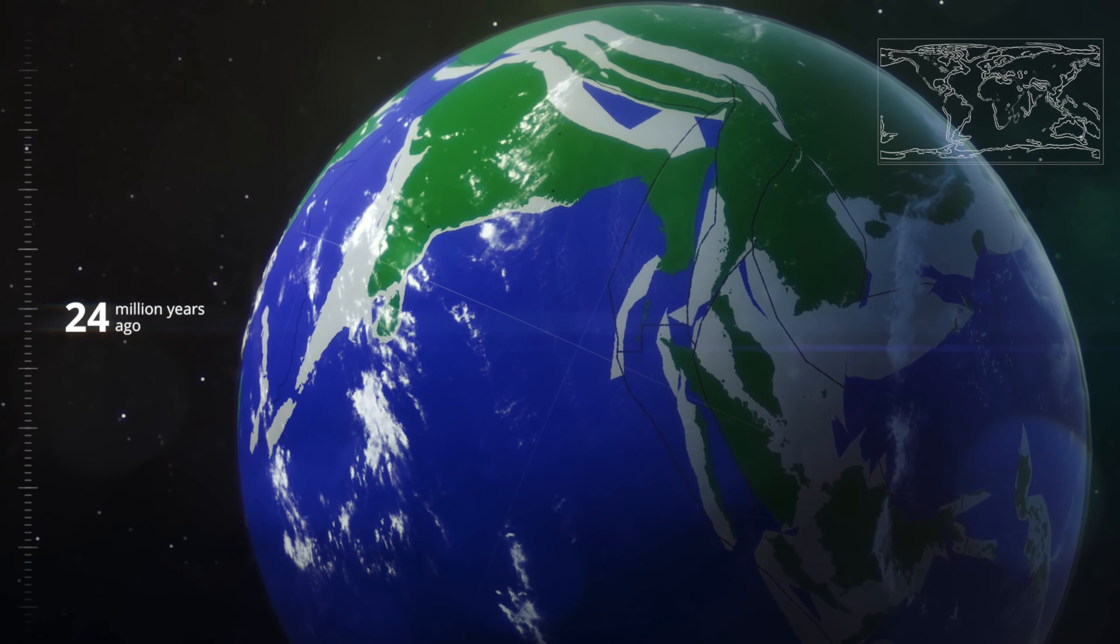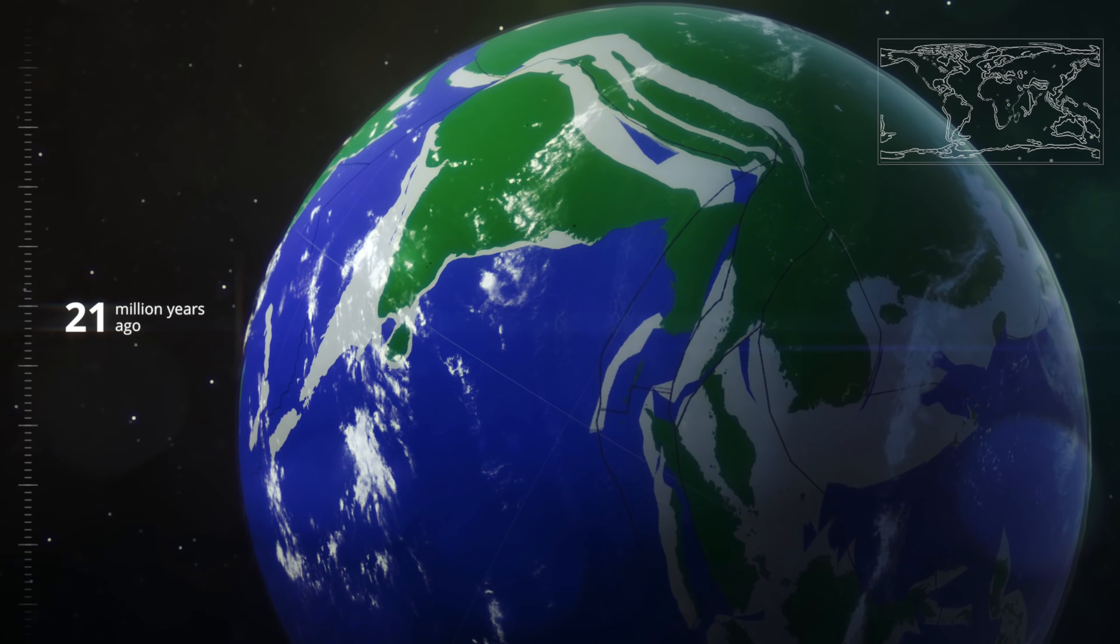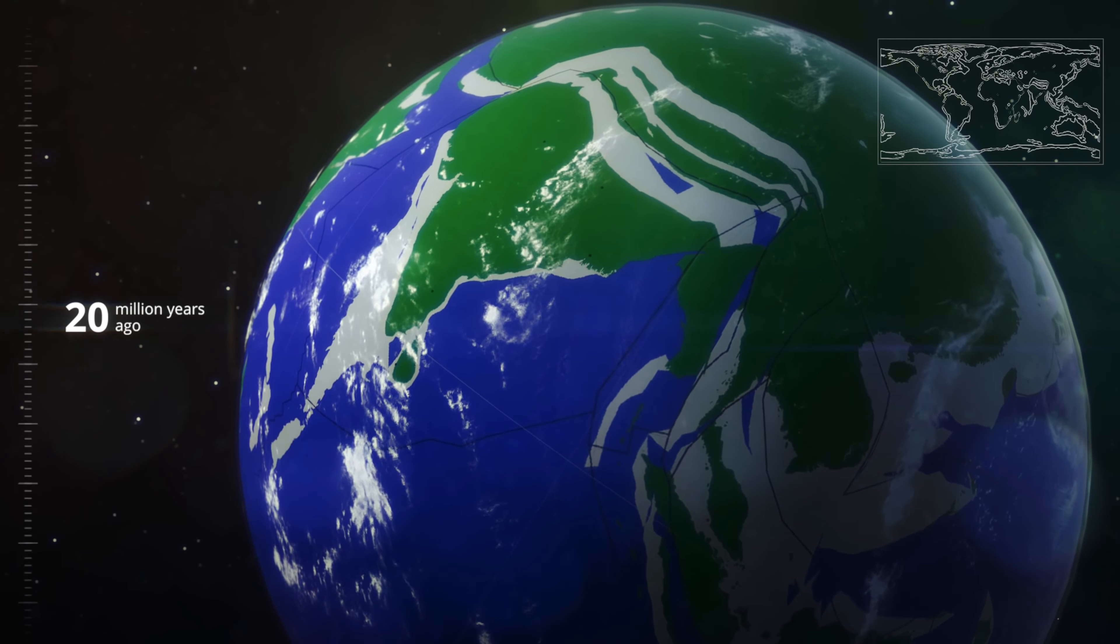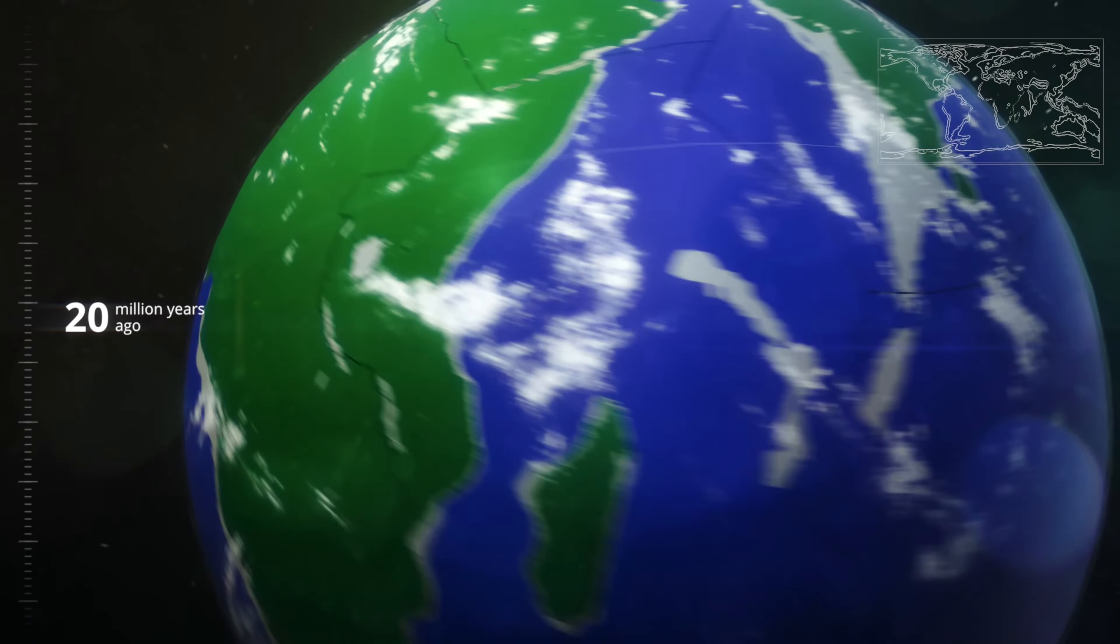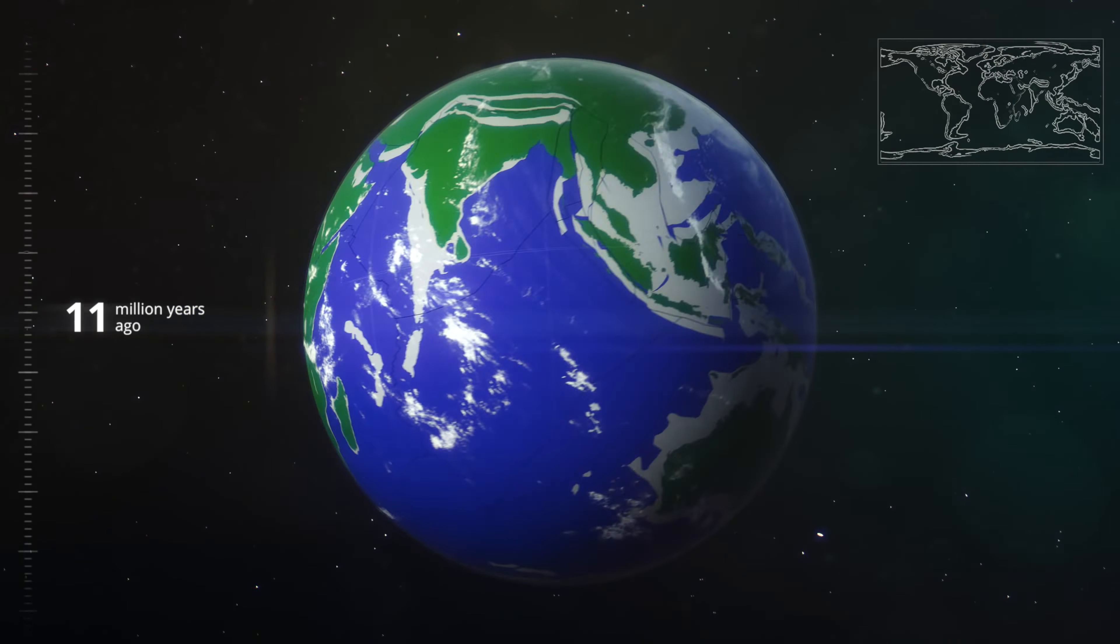At so-called subduction zones, one plate moves below another. The upper plate can get squeezed together and the rocks of the lower plate can be scraped off, creating massive mountain ranges all over the world. It is a never-ending process.